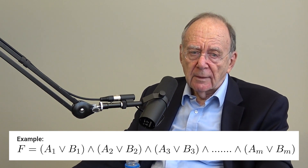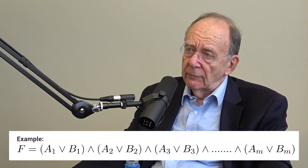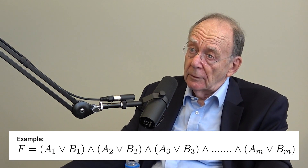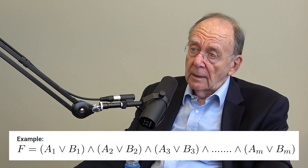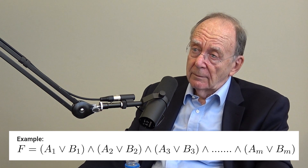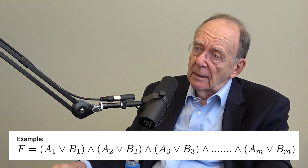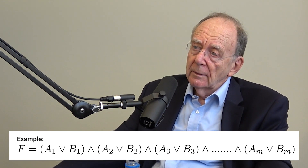To satisfy all those clauses, you have to find one term in each clause that will be true in your truth assignment. But you can't make the same variable both true and false. So if you have variable A in one clause and want to satisfy it by making A true, you can't also make NOT A true in some other clause. The goal is to make every single clause true, and you do that by making at least one term in each clause true.